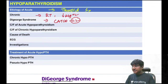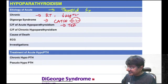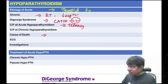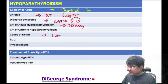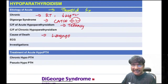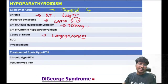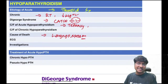Clinical features of acute hypoparathyroidism: mainly tetany. Cause of death is laryngospasm (compared to hyperparathyroidism where death is from systolic arrest). Other features include perioral paresthesia and periungual paresthesia.